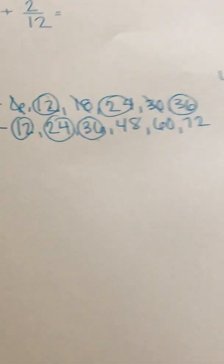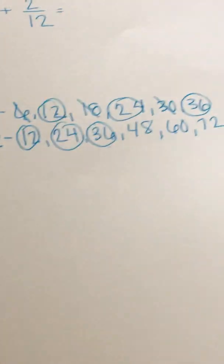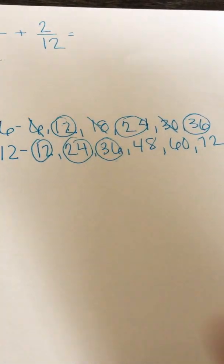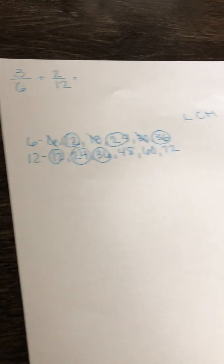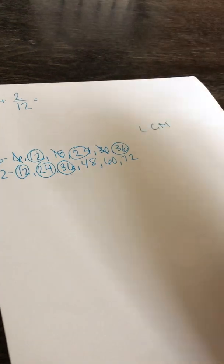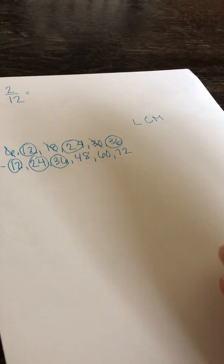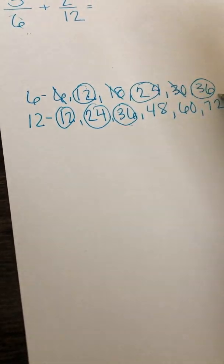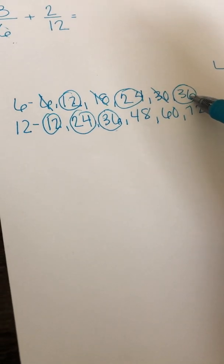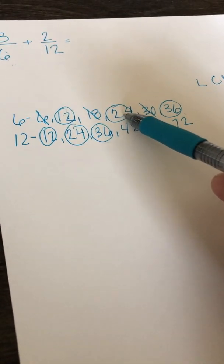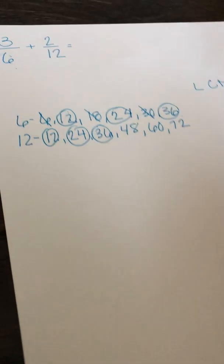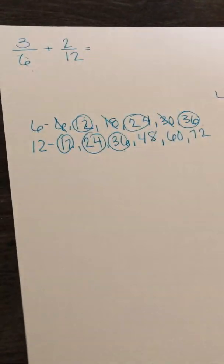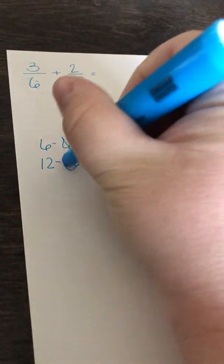I'm going to stop there because I have found a common multiple. You need to find at least one, and this is why — we are finding the lowest common multiple. So you're going to find the littlest multiple in the pair. Right now we have 12, 24, and 36. 36 would not be the littlest. 24 would not be the littlest. 12 would be the littlest. So we are going to make that our denominator.